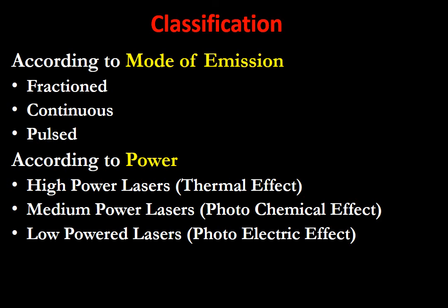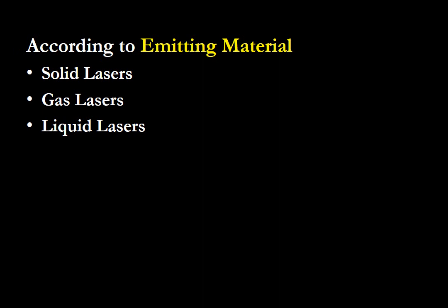Classified by power supply: high power lasers produce a thermal effect, mainly used for burning tissues; medium power lasers produce a photochemical effect, used in photodynamic therapy to activate chemicals in the periodontal pocket; and low power lasers produce a photoelectric effect, used in low-level laser therapy. Classified by emitting material: solid laser, gas laser (e.g., carbon dioxide), liquid laser, or diode laser, depending on the material emitting the laser beam.